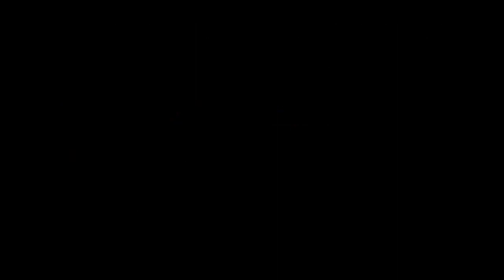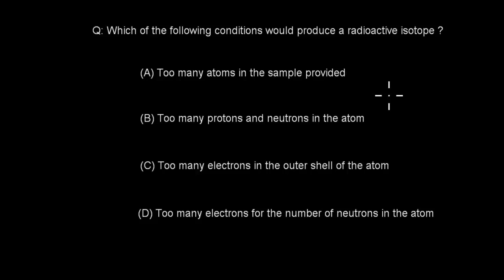Next question: which of the following conditions will produce a radioactive isotope? A. Too many atoms in the sample provided, B. too many protons and neutrons in the atom, C. too many electrons in the outer shell of the atom, or D. too many electrons for the number of neutrons in the atom.